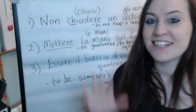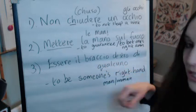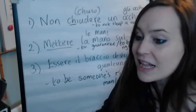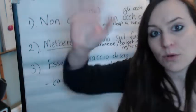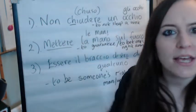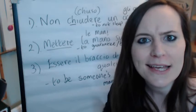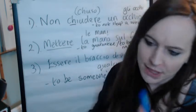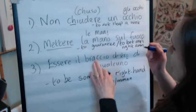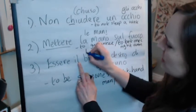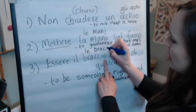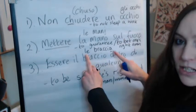Destra, sinistra. So here we've got destro, which agrees with braccio — il braccio. That word braccio is masculine in the singular but becomes feminine in the plural. In the plural, il braccio changes: il becomes le and braccio with an O at the end becomes le braccia.